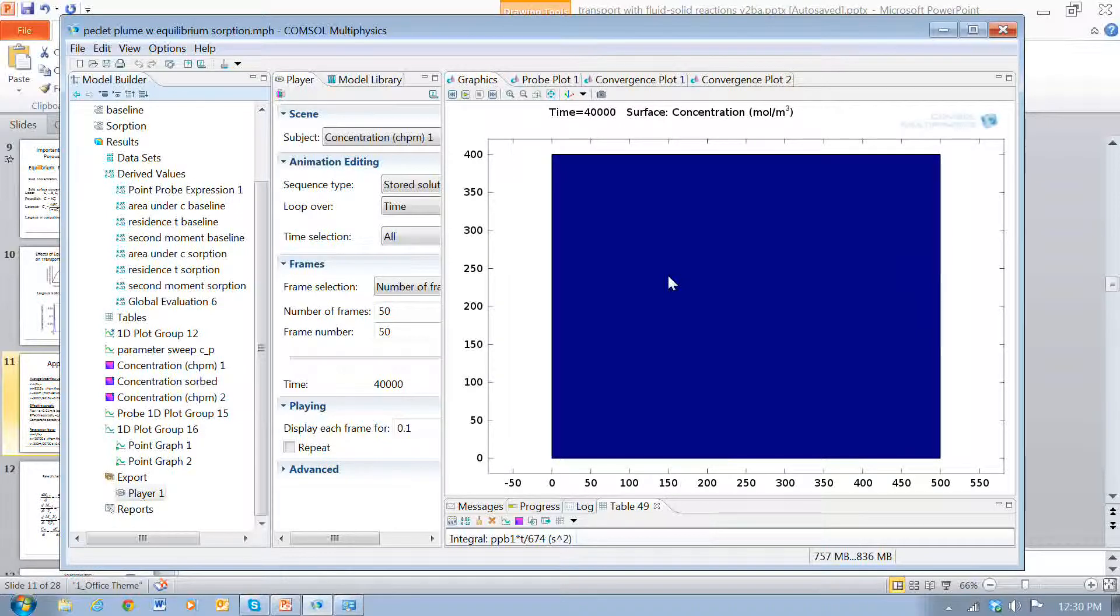then we can get characteristics of the travel of the water. And if we use a compound that does sorb, then we can get characteristics that describe how that sorption retards the flow or the velocity of the contaminant movement.